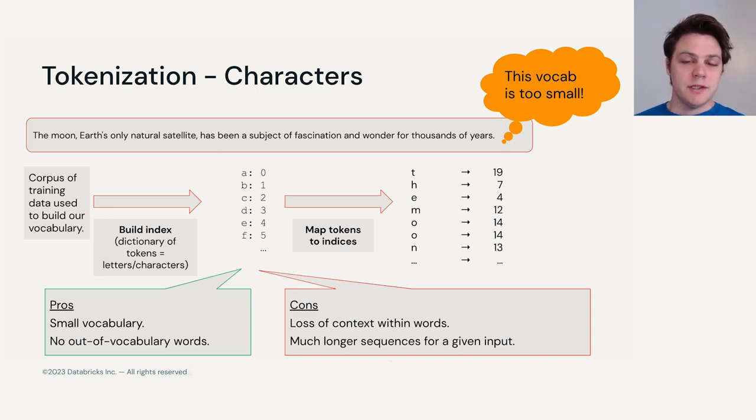This would create a very small vocabulary, for sure. And we'd be able to create any new words that we want to. We'd be able to account for any misspellings. However, the problem lies in the fact that we lose the notion of what a word is. We have to keep in mind that when we're dealing with problems in NLP, the context and the meaning is something that we're going to have to try and conserve. By breaking things down into individual characters, we lose the sense of what a word is.